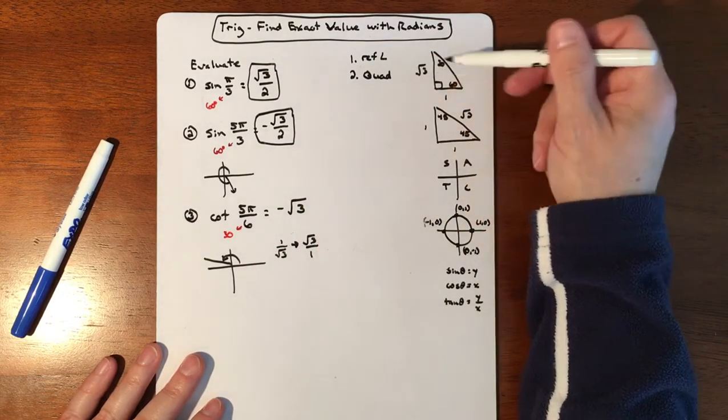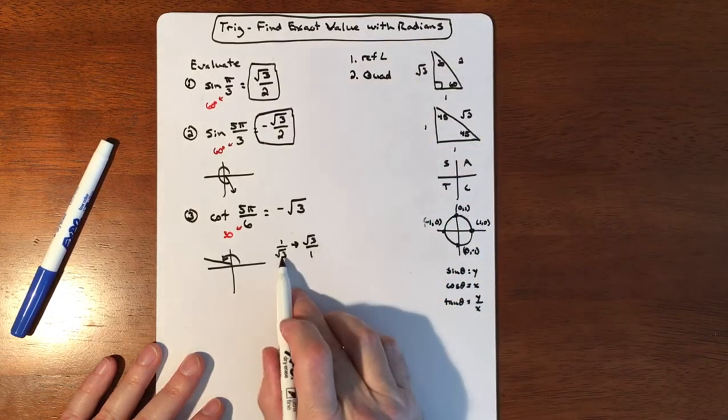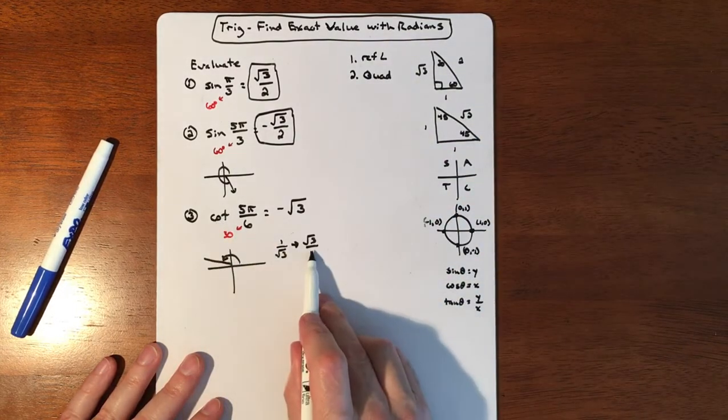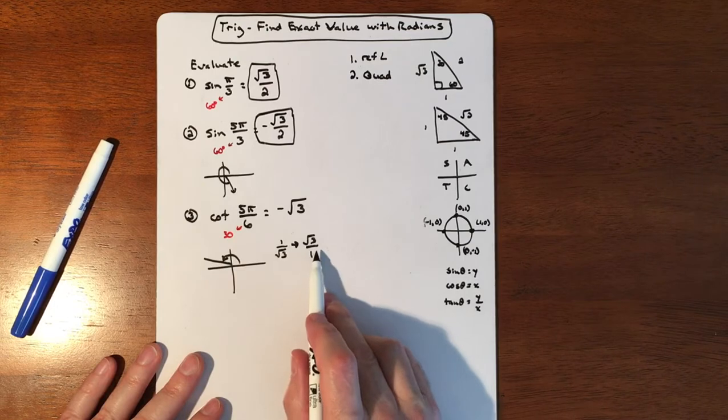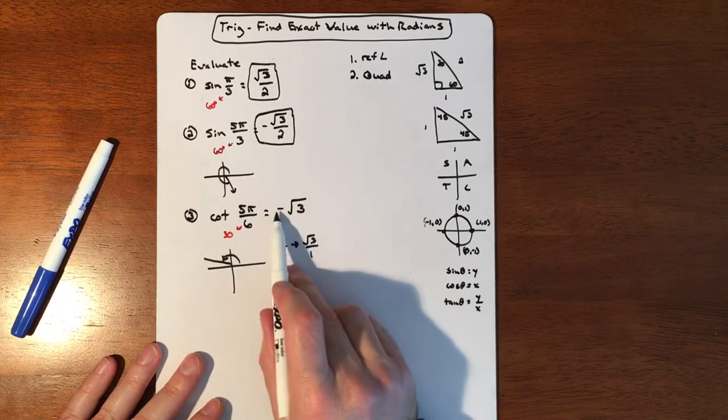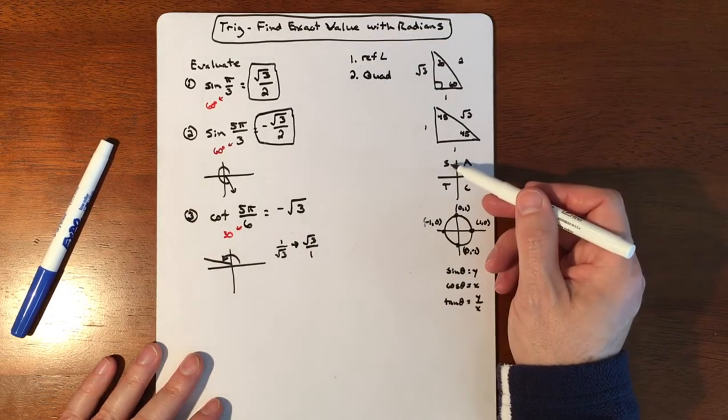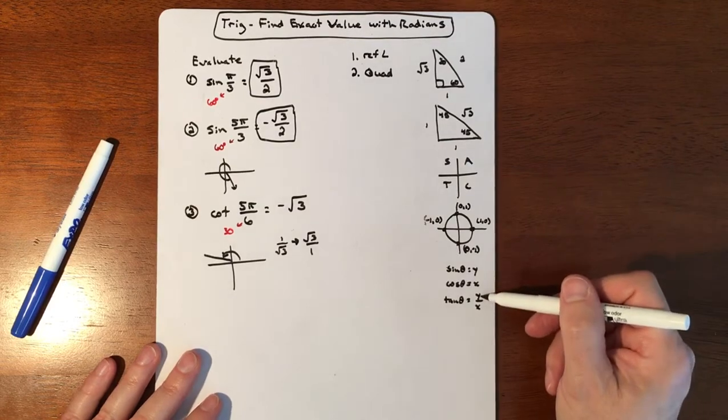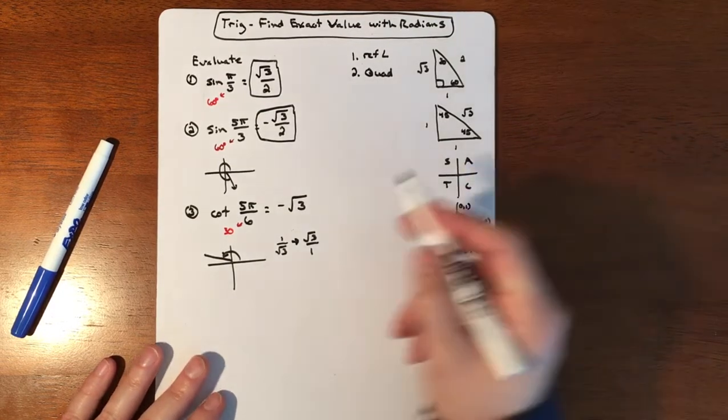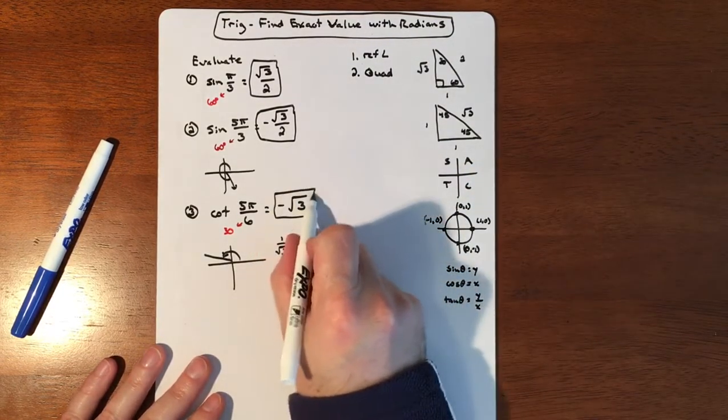I know it's negative because we're in the second quadrant. So reference angle gave us our triangle, which gave us this fraction. Tangent's the reciprocal, or cotangent's the reciprocal of tangent. So I flipped it. We tack a negative on because of the quadrant location, because you're dealing with y's divided by x's, which is going to be negative.